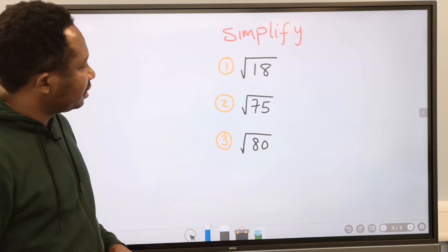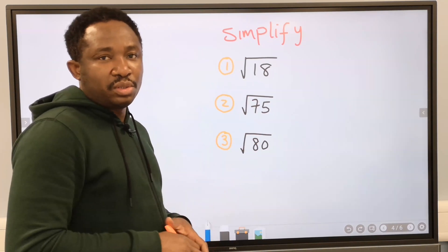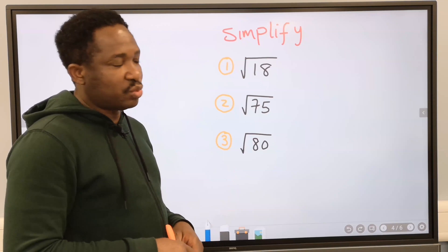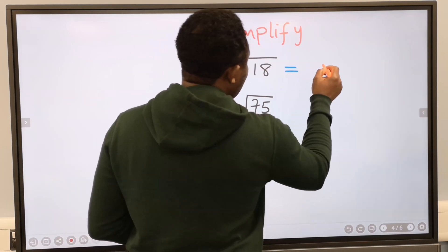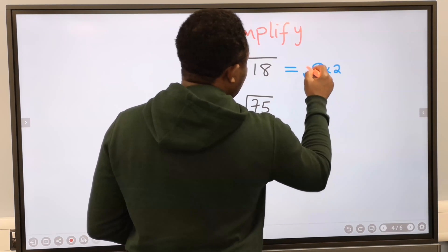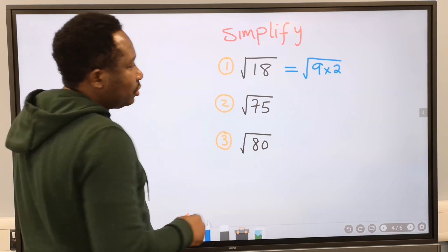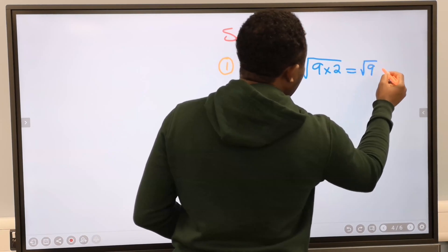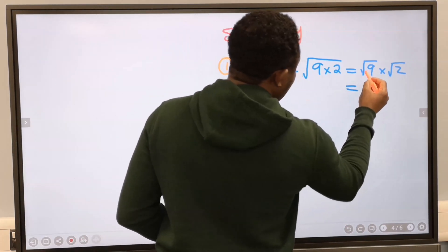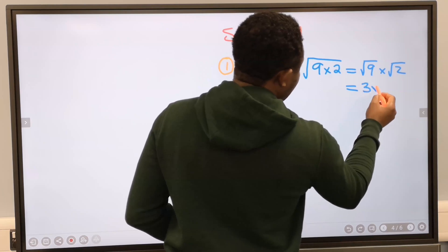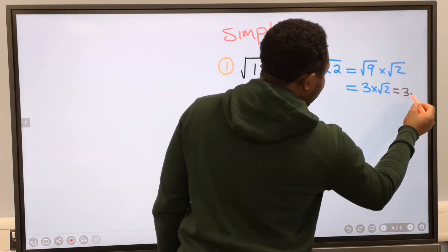We are going to simplify this surd problem. To solve number one, we are going to think of two numbers: one will be a perfect square and the other will not be a perfect square. The two numbers are 9 multiplied by 2, since 9 times 2 gives 18. Now we can apply the law: the square root of 9 multiplied by the square root of 2. The square root of 9 is 3, so our answer is 3 root 2.